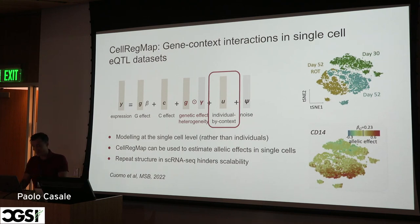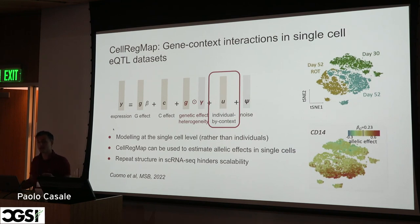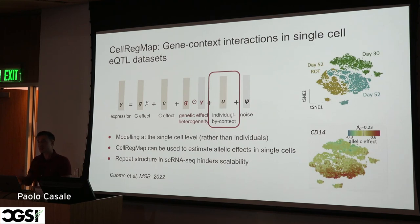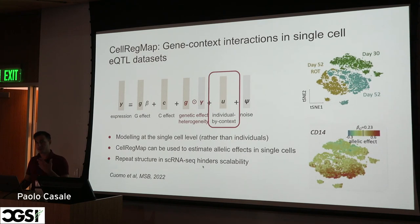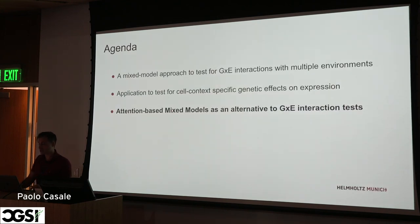One of the challenges when doing this modeling at the single-cell level is that you now have multiple cells from the same individual. You need to account for this repeated structure in order to get calibrated p-values, so you add another random effect that models this repeat structure. Thanks to this addition you get calibrated p-values and can test for single-cell heterogeneous effects. However, this addition really hinders scalability — it makes this framework scale cubically with the number of individuals.